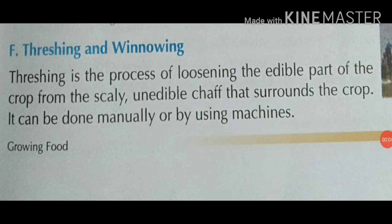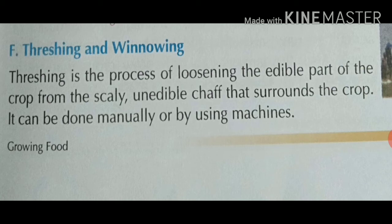Our next topic is threshing. Threshing is the process of loosening the edible part of the crops from the scaly, inedible chaff that surrounds the crop. Edible means what we use for food. Scaly means dry. Inedible means what we don't use for food. Chaff means straw. So threshing is the process of loosening the edible part of the crop from the inedible chaff.